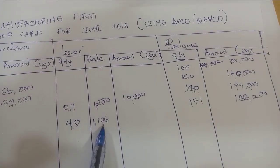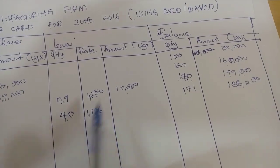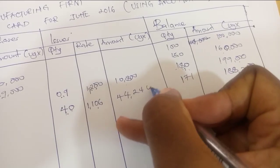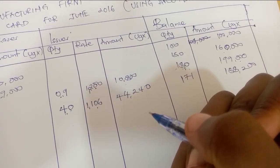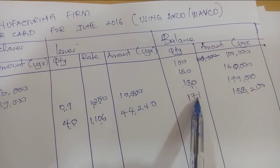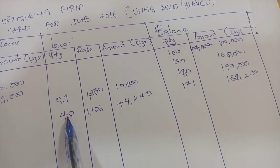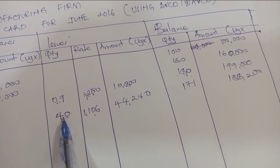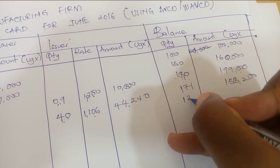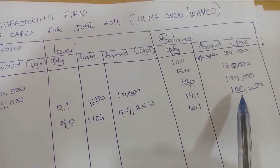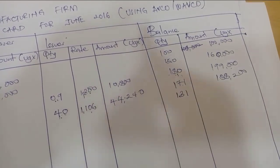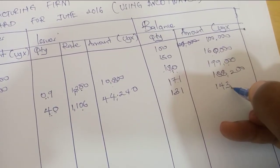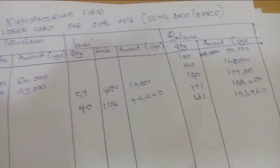For the balance after the 10th issues: quantity 171 minus 40 equals 131 units, and 188,200 minus 44,240 equals 143,960.